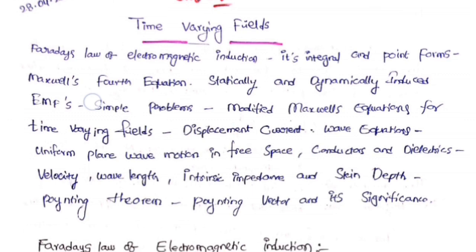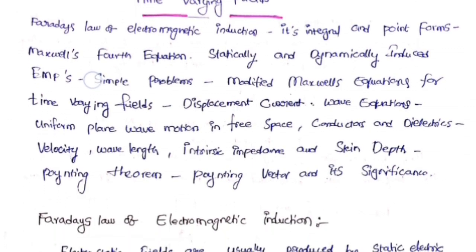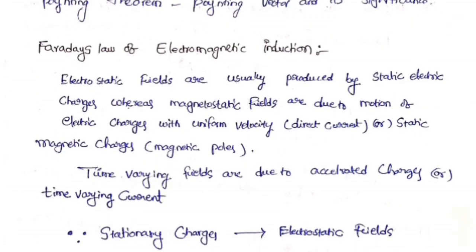First, we will discuss Faraday's laws of electromagnetic induction. Electrostatic fields are usually produced by static electric charges, whereas magnetostatic fields are produced by the motion of electric charges. At the starting, electrostatics is the study of charges at rest, whereas magnetic fields are produced due to motion of electric charges with uniform velocity — that is magnetostatics.